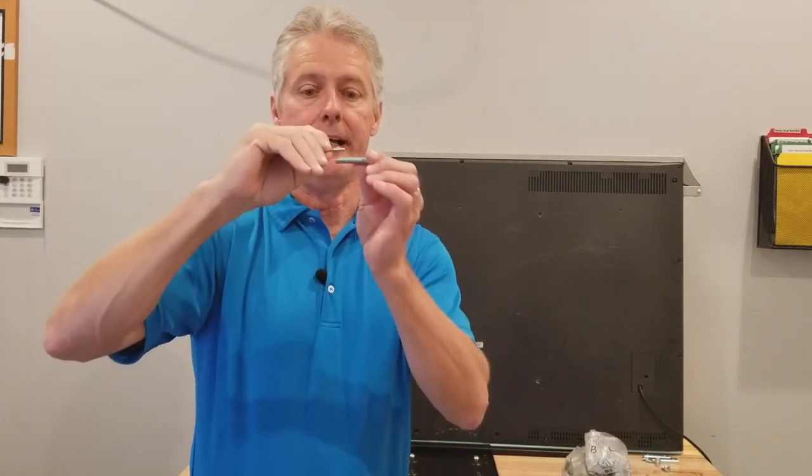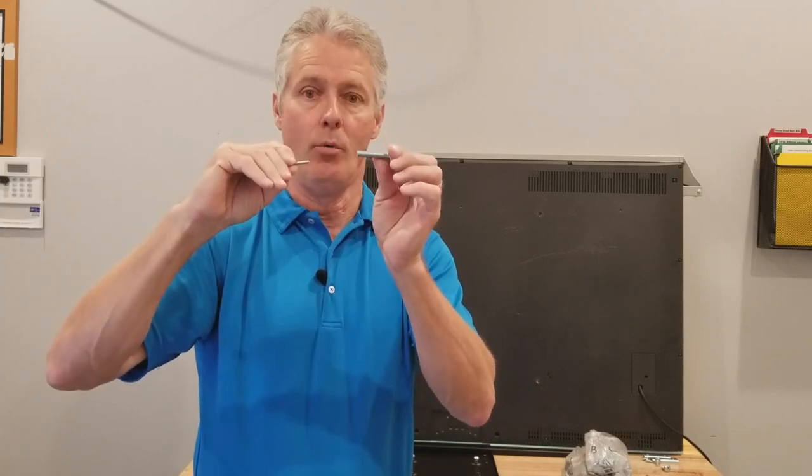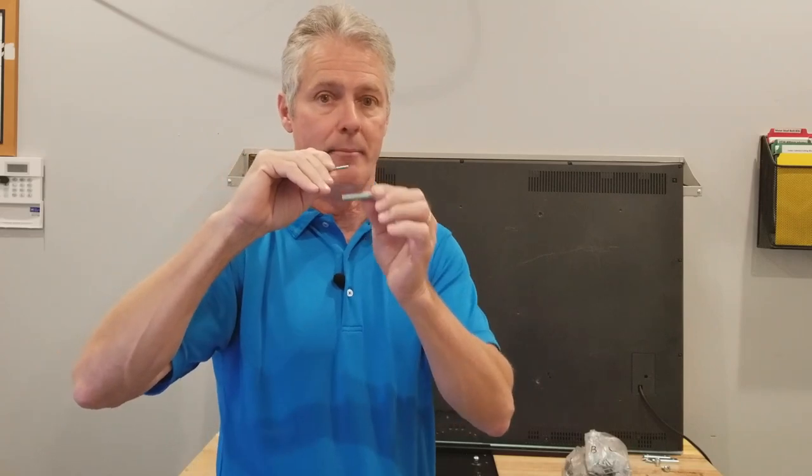I'll take my thinner screw and put it in the hole to see—that's about three quarters of an inch of depth. If I use the longer bolt in the kit, you can see I'm about an inch too long. This longer bolt would bottom out and then go into the TV causing damage.